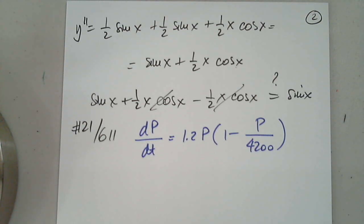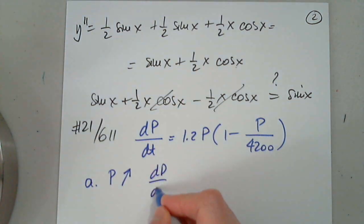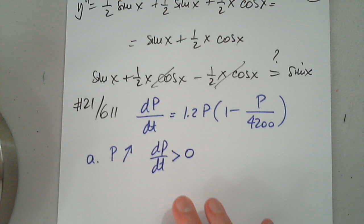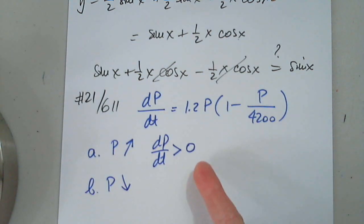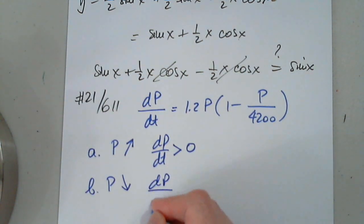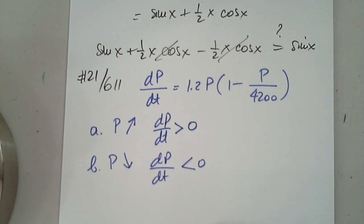Part A, for what values of P is the population increasing? So we know the population is increasing when its derivative is positive. And we're going to talk about that in a minute. Also part B. When is the population decreasing? We already know this from Calc 1. When the derivative of a function is negative, then the function is decreasing. And then part C.